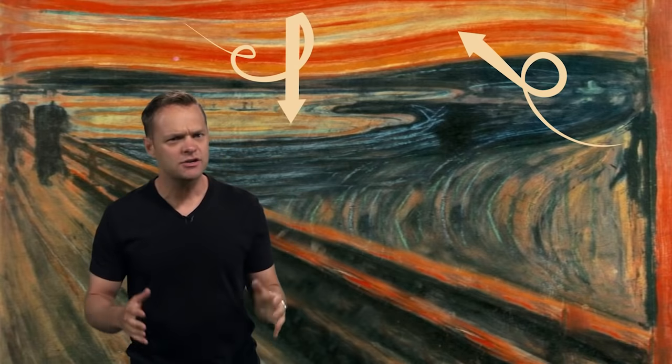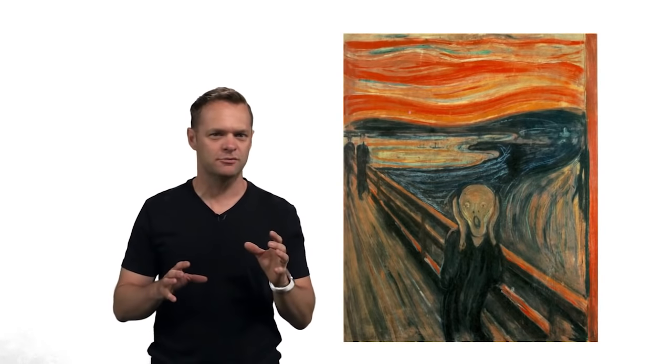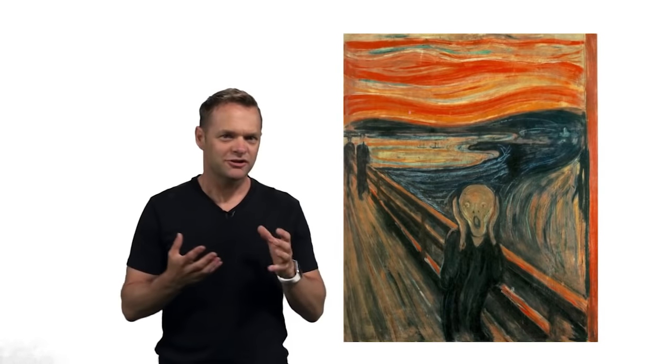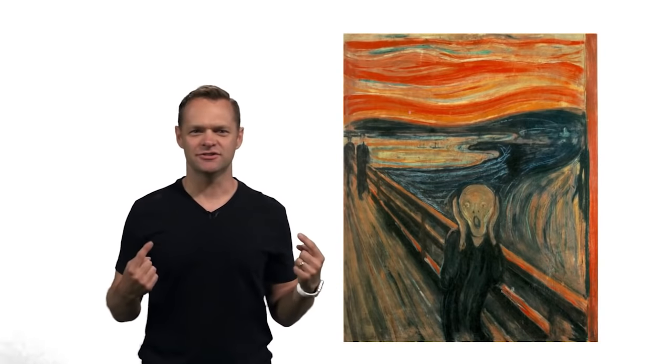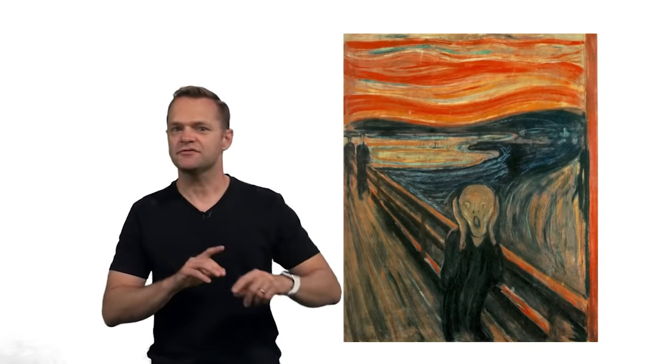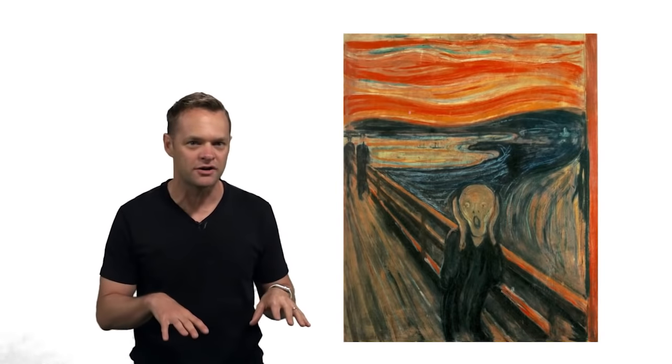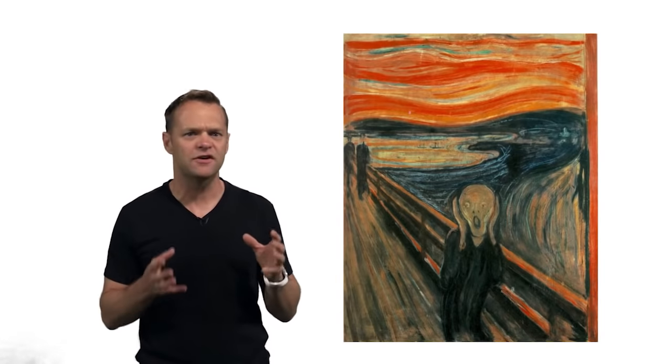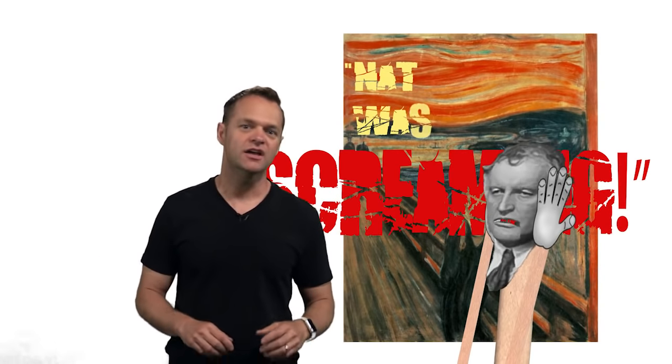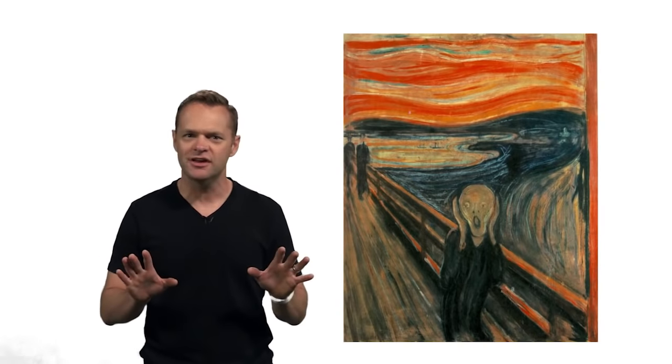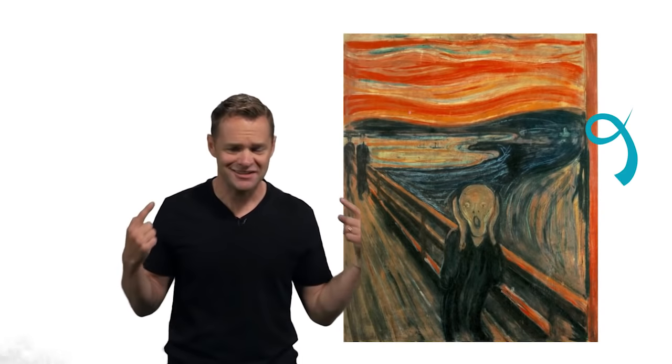When Munch saw these colors, both in the sky and the water, he was so scared. Have you ever been scared before? Yeah, and have you ever been so scared that you can't even move? That's exactly what is happening here. So Munch is standing here in the middle of the boardwalk, frozen and scared. But look at his hands. Where are they? Yep, on his ears.